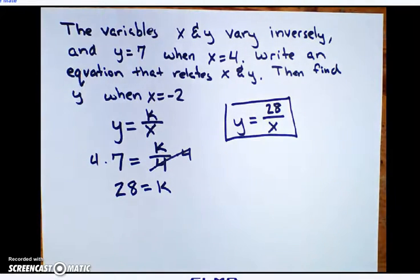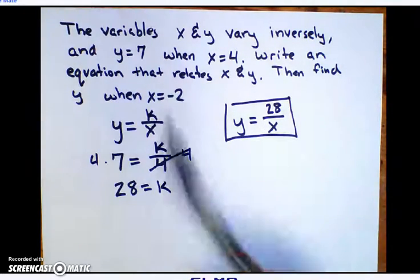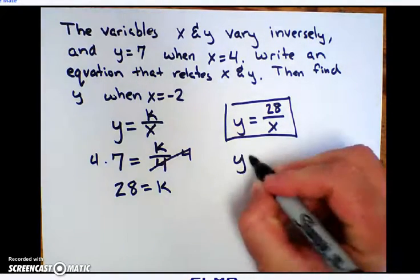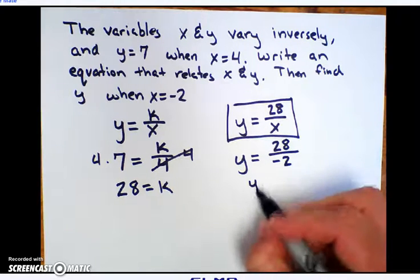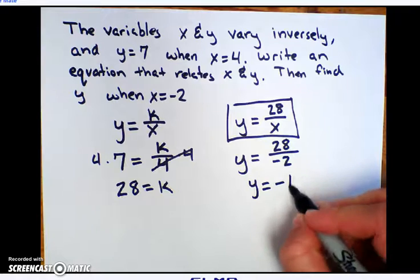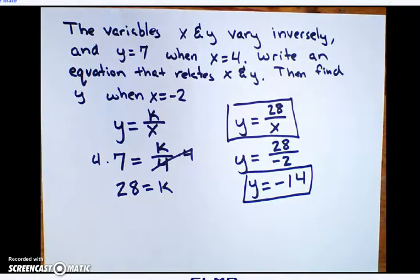So that is the answer to the first question it asked, which was to write an equation. The second thing it asked here, the third sentence, then find y when x is negative 2. So I want to know what y is when x is negative 2. Well, 28 divided by negative 2 is negative 14.